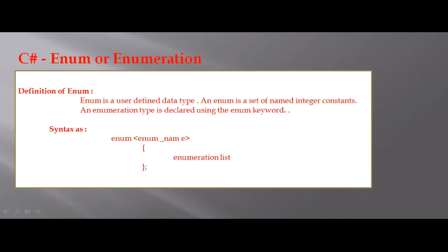To declare an Enum: first write the Enum keyword, then place the Enum's name, followed by curly brackets open and close. Inside the curly brackets, write the Enum list — the items are comma-separated.